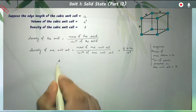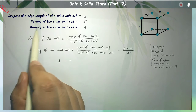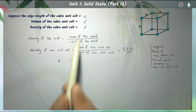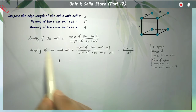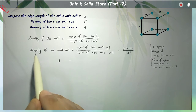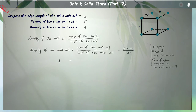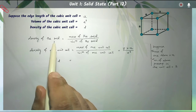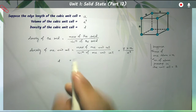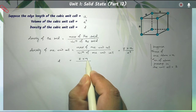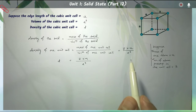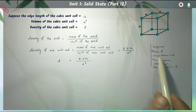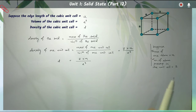The volume of one unit cell is a³, since the edge length is 'a'. So the density 'd' of the unit cell, which equals the density of the solid for a crystalline solid, can be written as: d = (z × m) / a³.